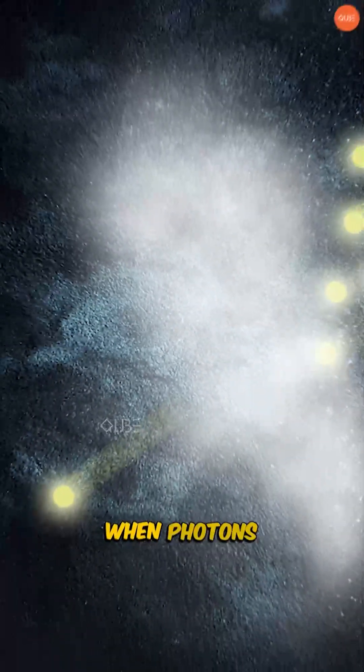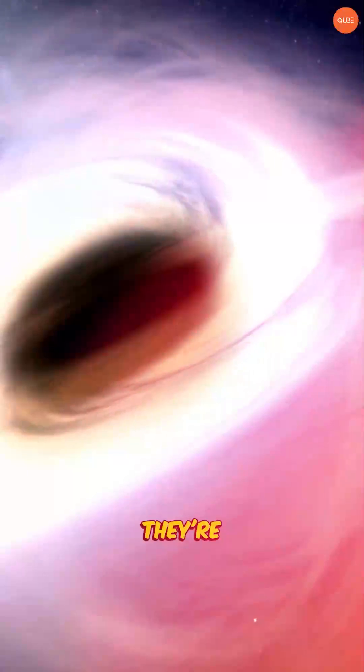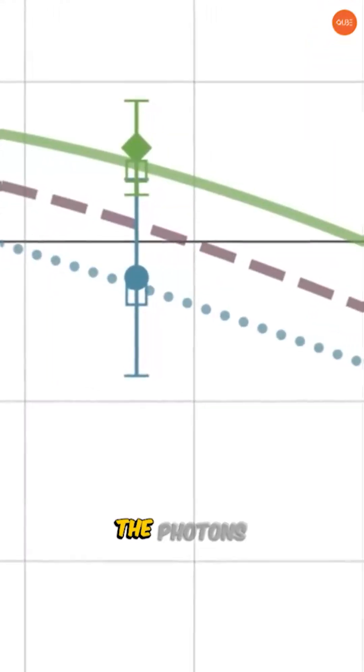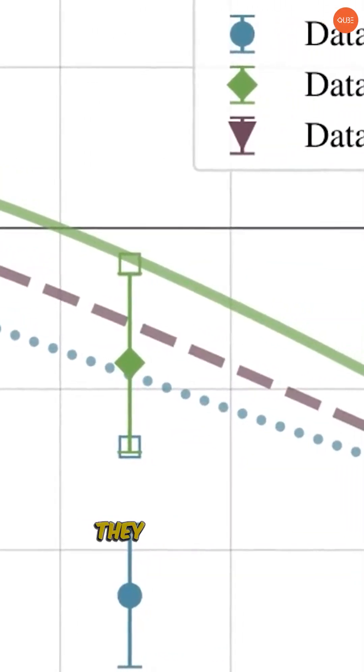Here's what they discovered. When photons pass through a cloud of atoms, they're absorbed and re-emitted. But the data showed something shocking. The photons seemed to exit the cloud before they entered it.